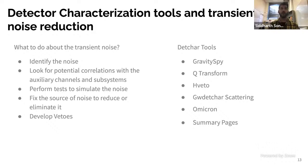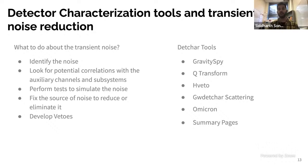To do all of this, there are quite a few detector characterization and data quality tools that help us. We have Gravity Spy, Q-transform, HVETO, a scattering tool, Omicron, and summary pages. In the next few slides I'll look at some of these tools and discuss how they work.